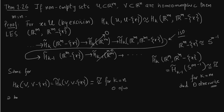Homeomorphism obviously induces an isomorphism between homology groups, and that should imply m is equal to n.